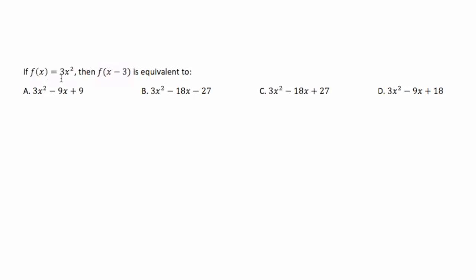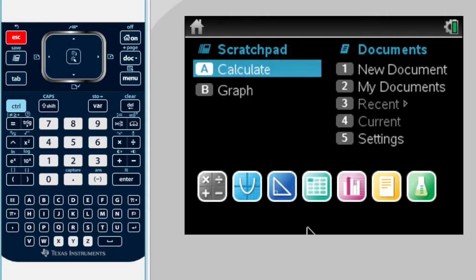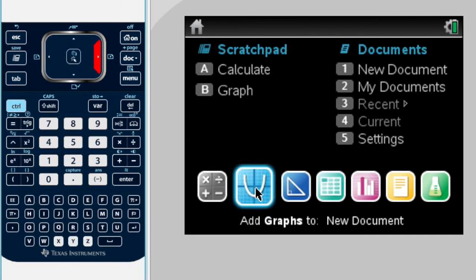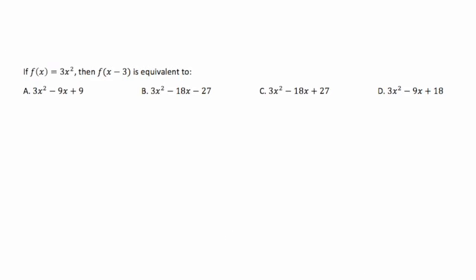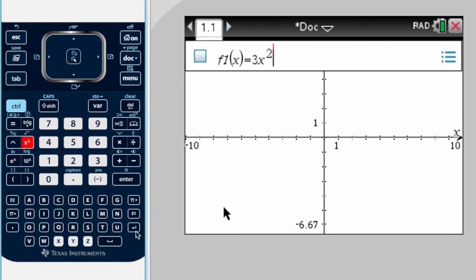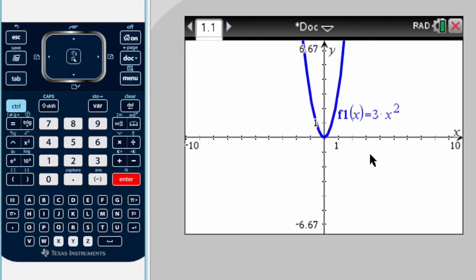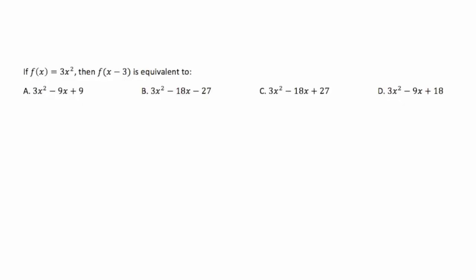So, if f of x equals 3x to the second power, then f of x minus 3 is equivalent to what? The first thing I notice is that I have an original function: f of x is 3x to the second power. I'm going to go to my Inspire, go to my graph function, and graph my original function. My original function was 3x squared — this is the quadratic function that we're talking about. Now in my problem, they say that this function was transformed to f of x minus 3.